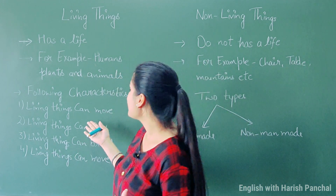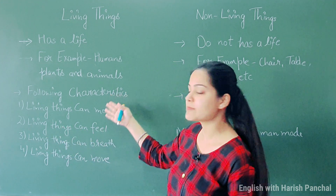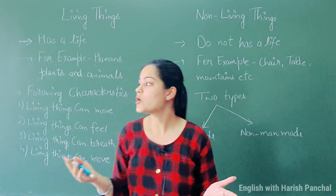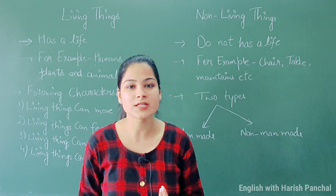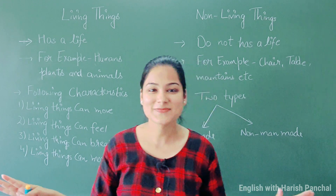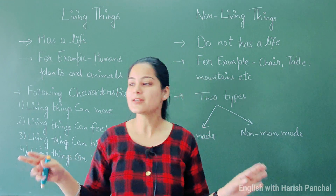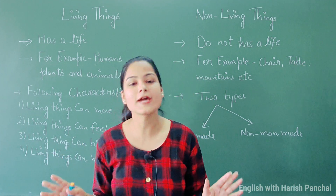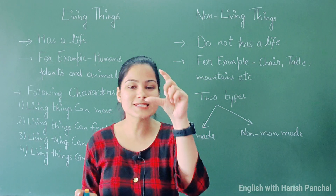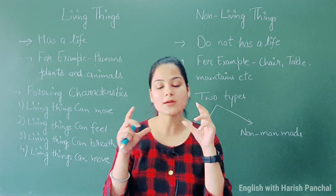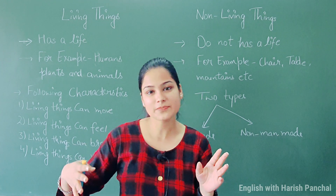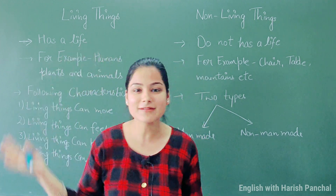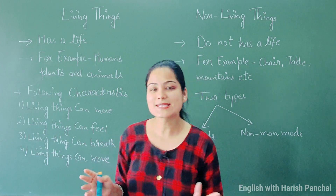Living things can move. Cats, animals, dogs — they all can walk, run, and do any kind of movement. Also, plants can grow. Earlier it was a seed, then it gradually grows and becomes a seedling, and then it becomes a big tree. This is called growth.